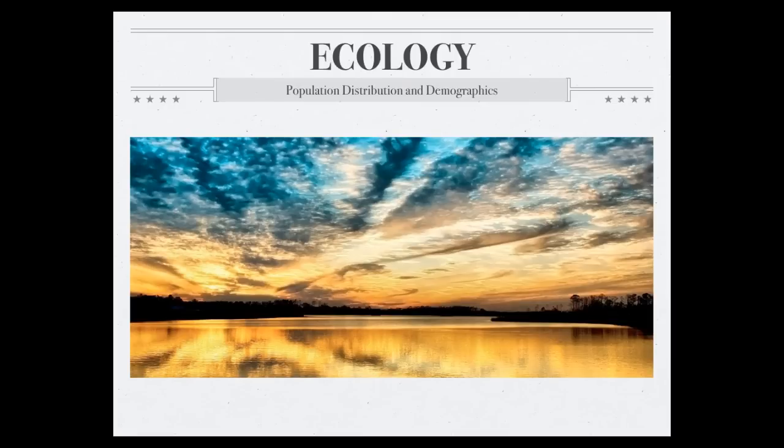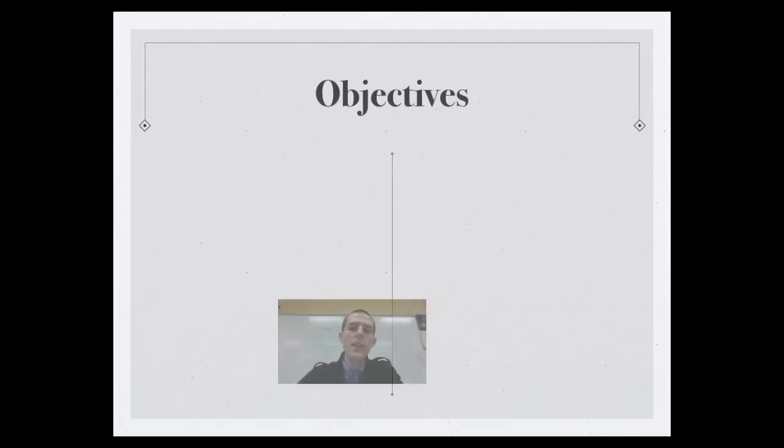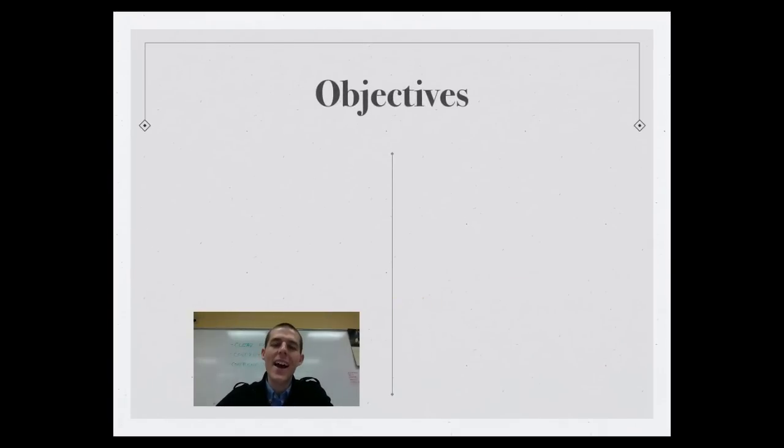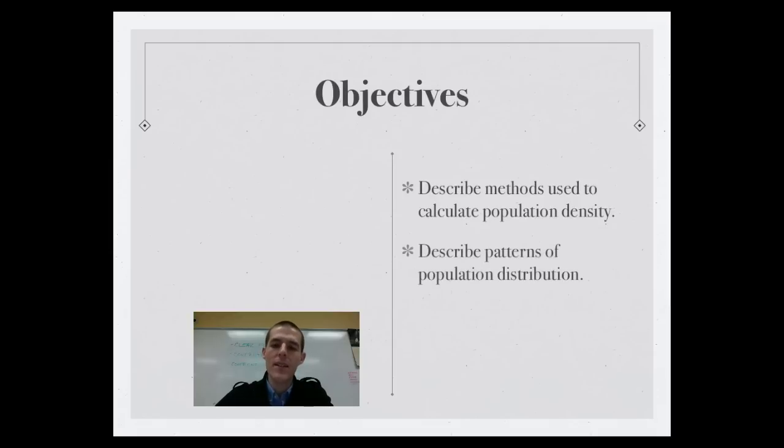Let's get your objectives and then we'll get going for the day. By the end of this video, three things that I need you to know or be able to do. First, describe methods used to calculate population density. Second, describe patterns of population distribution. And third, explain qualities of a population tracked by demographers. So that's what we're after. Let's go ahead and get there.